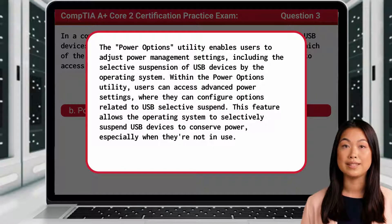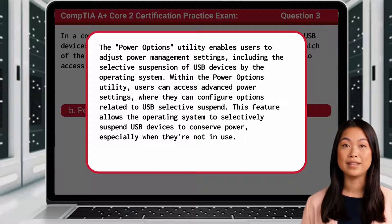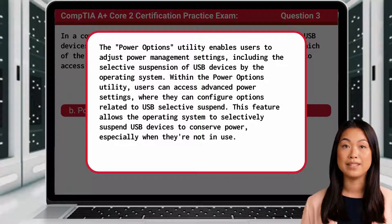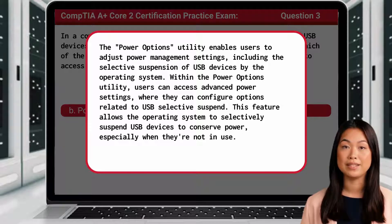The Power Options utility enables users to adjust power management settings, including the selective suspension of USB devices by the operating system. Within the Power Options utility, users can access advanced power settings where they can configure options related to USB selective suspend. This feature allows the operating system to selectively suspend USB devices to conserve power, especially when they're not in use.